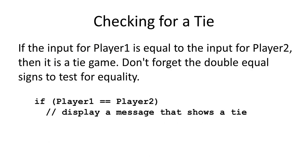Checking for a tie is really easy. All we need to do is see if player1 == player2. If that's the case, it's a tie game. I don't need three different tests to check if both players chose R, or both chose P, or both chose S. All I need to do is see if they are equal — then I know it's a tie.